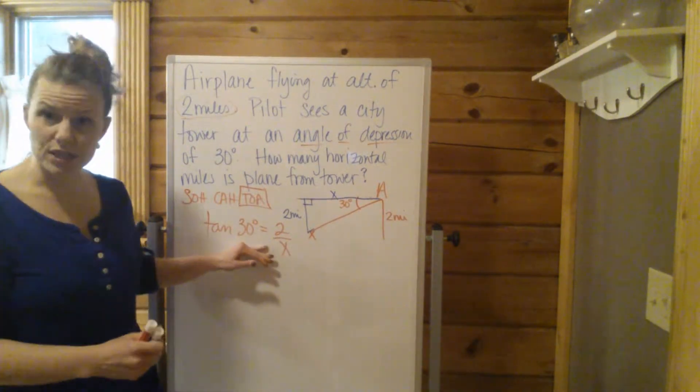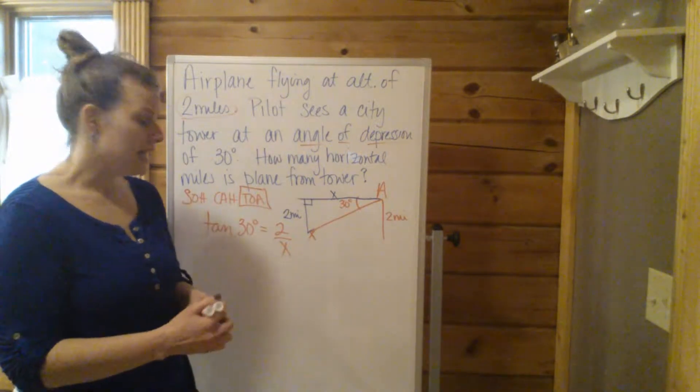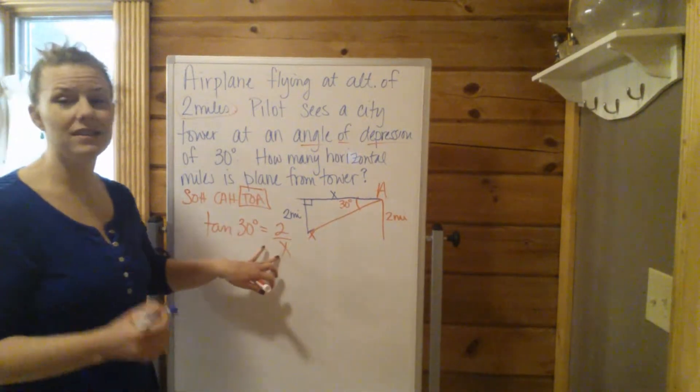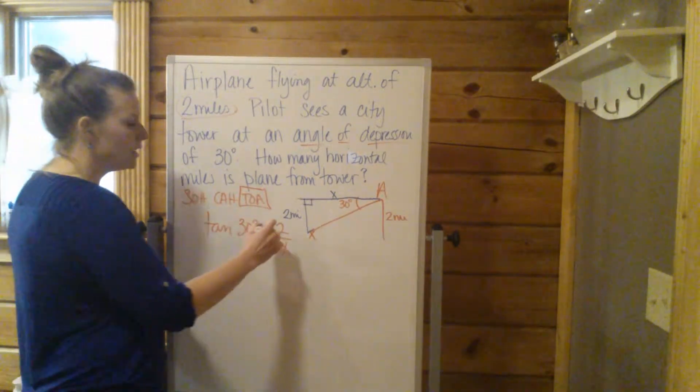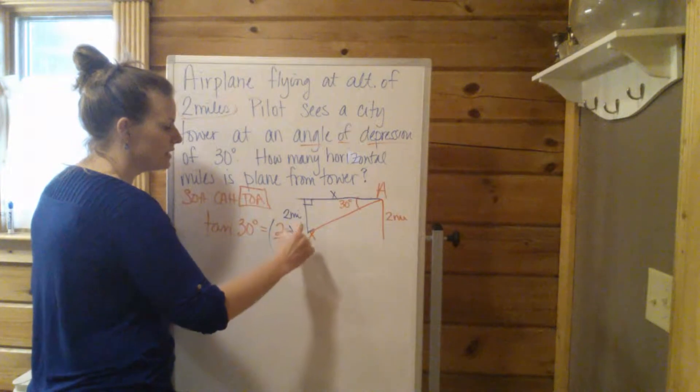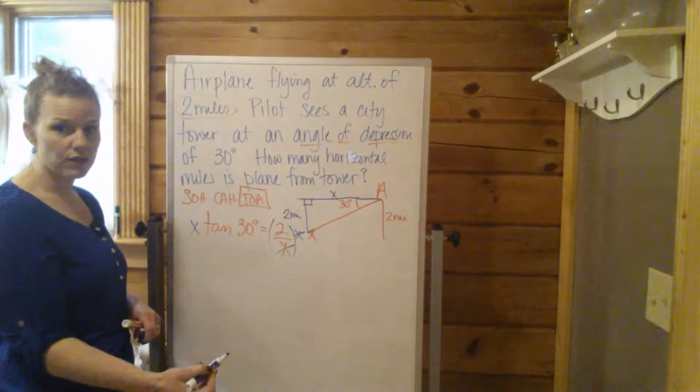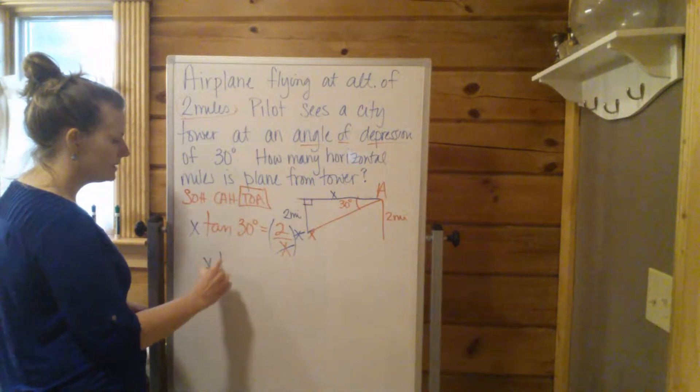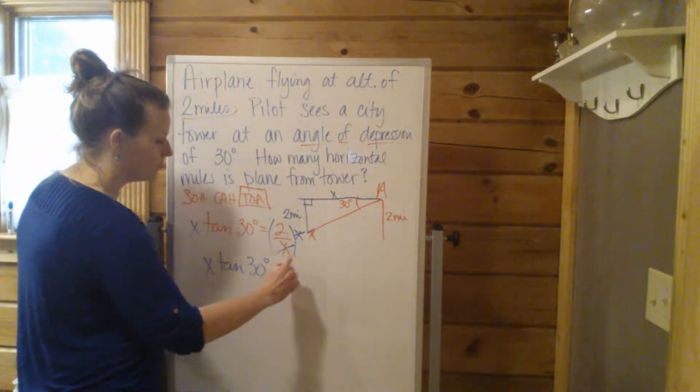So now once we have the equation set up, it just should be smooth sailing. We're just going to solve for X. Now in this case, the X is in the denominator, so be careful with your algebra. The easiest way to go here is if we multiply both sides of this equation by X. The X's cancel out over here. So now we have X tangent of 30 equals 2.